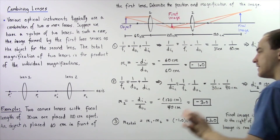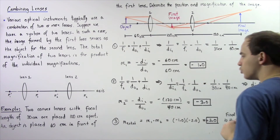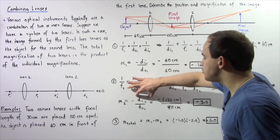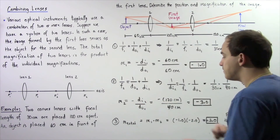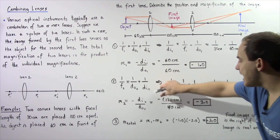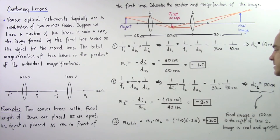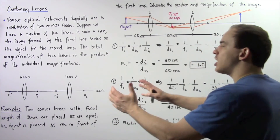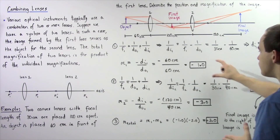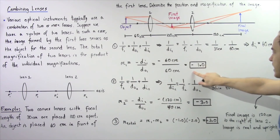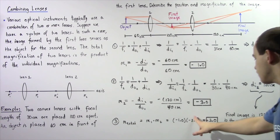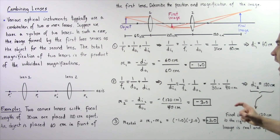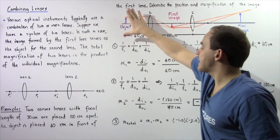Now let's calculate the magnification of lens two, M2. Using the same equation, M2 equals negative of the image distance of lens two divided by the object distance of lens two: negative 120 centimeters divided by 40 centimeters gives M2 equal to negative three. To calculate the total magnification, we multiply M1 by M2: negative one multiplied by negative three gives positive three. This means the final image size is three times that of our initial object.